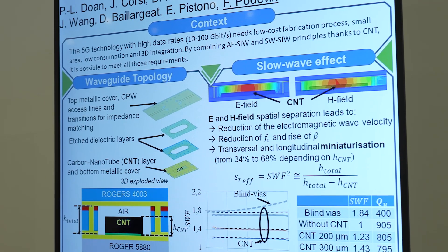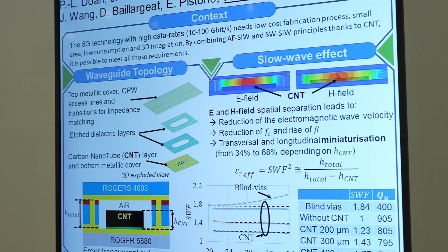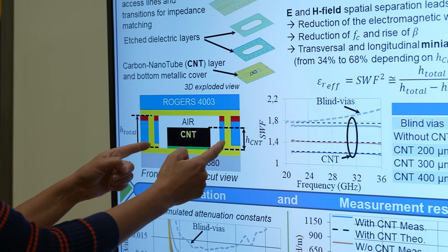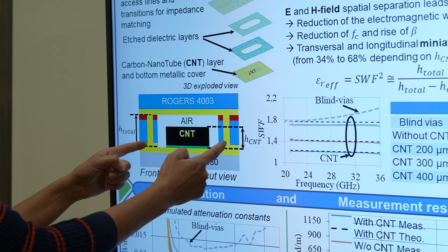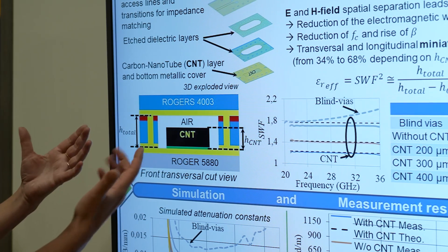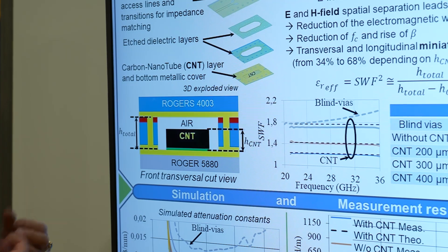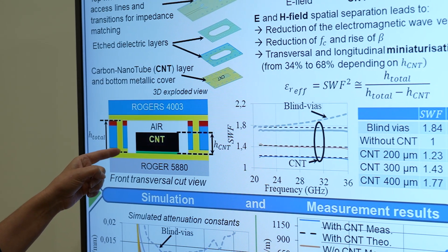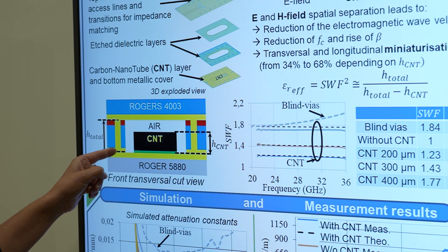There is an issue with substrate-integrated waveguides: they are large because their width is about lambda over 2. What people want to do is reduce this length even if the waveguide is working at the same frequency. A way to do that is to introduce what we call slow-wave effect.